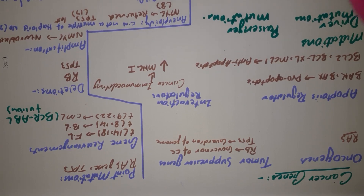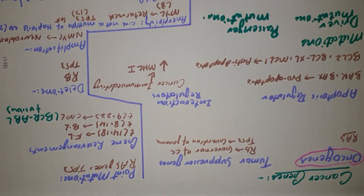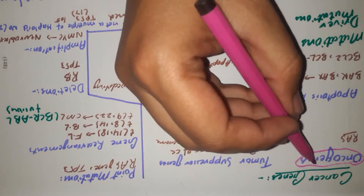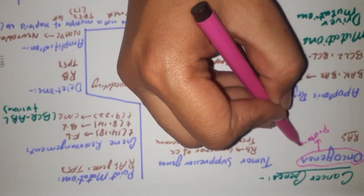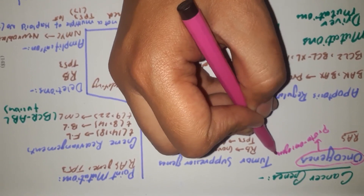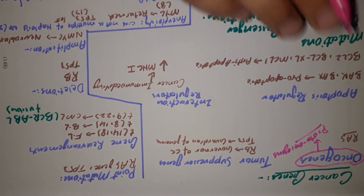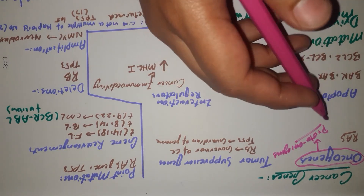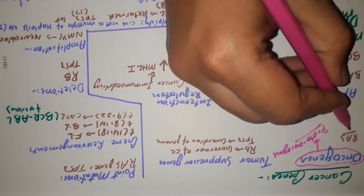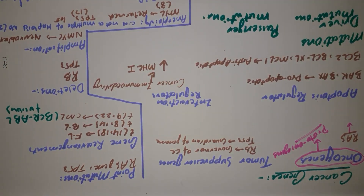In cancer genes, the first gene of great importance is oncogenes. Oncogenes are the genes which lead to increased cellular production. These oncogenes are basically derived from proto-oncogenes. Proto-oncogenes are genes which normally regulate cell division. However, if there is some mutation in proto-oncogenes, they get converted to oncogenes and then increase cellular production. One common example of an oncogene is the RAS pathway, which is involved in cellular signaling that controls the cell cycle or cellular production.